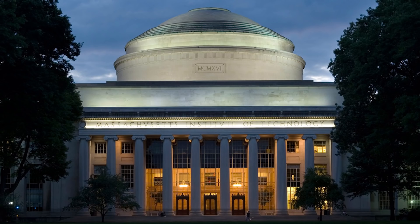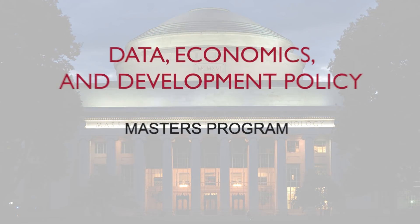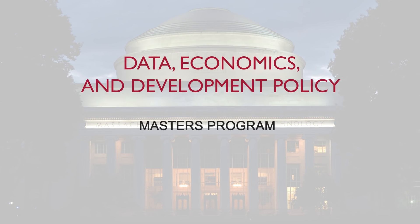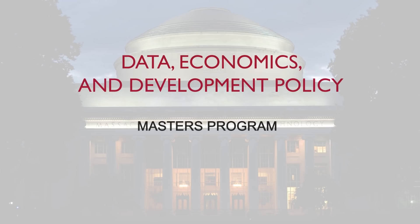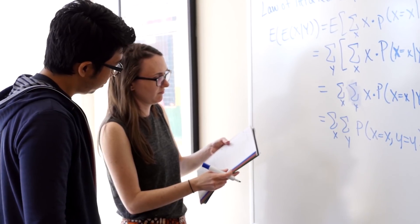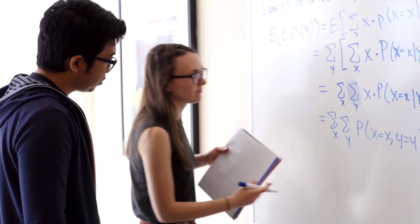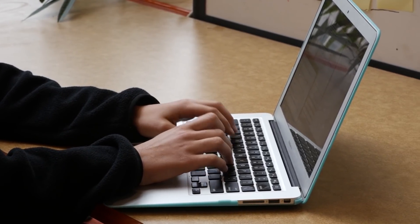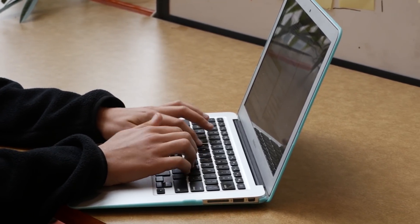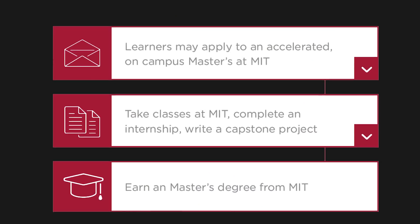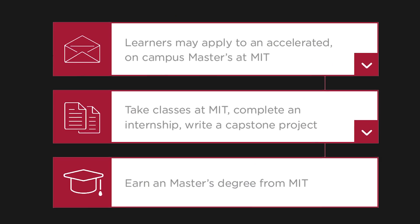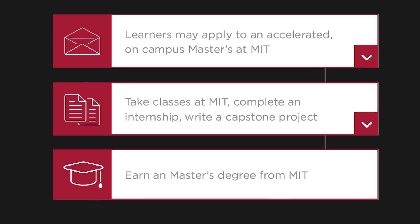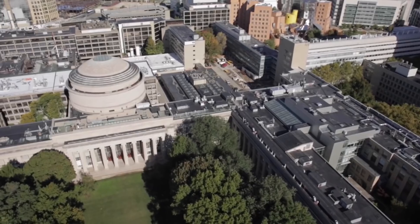MicroMasters credential holders who apply and are accepted to MIT's new on-campus master's program in Data Economics and Development Policy will be recognized as already having one semester's worth of credit. So accepted students will earn MIT credit for the classes that they completed online and will be able to pursue an accelerated master's degree here at MIT.